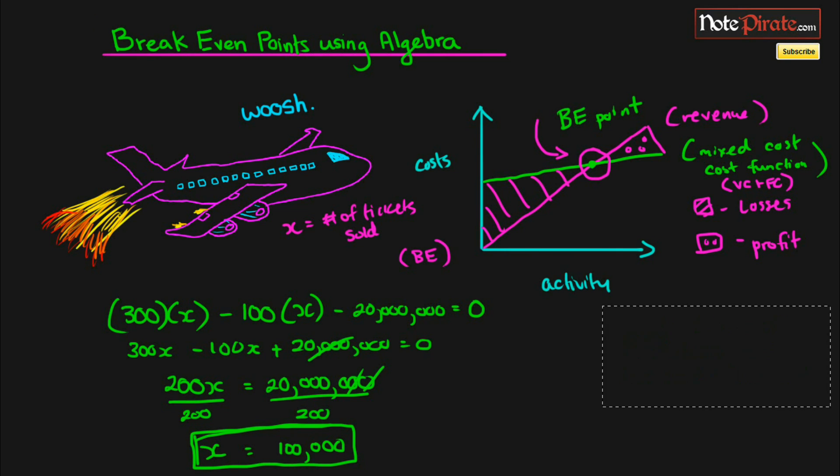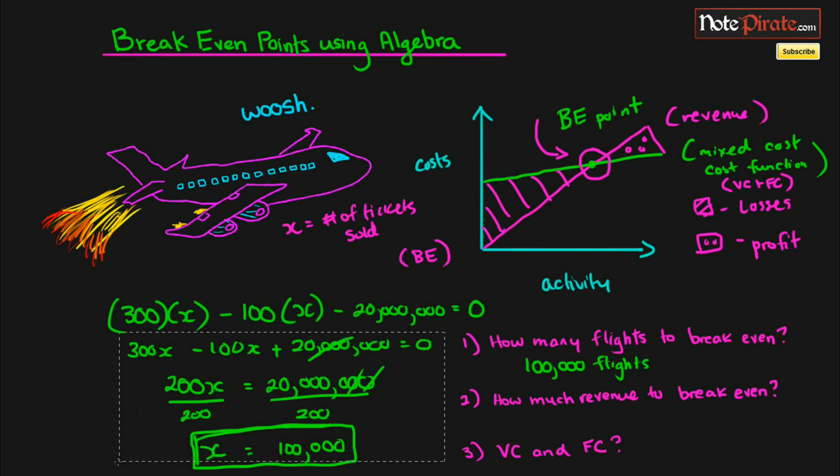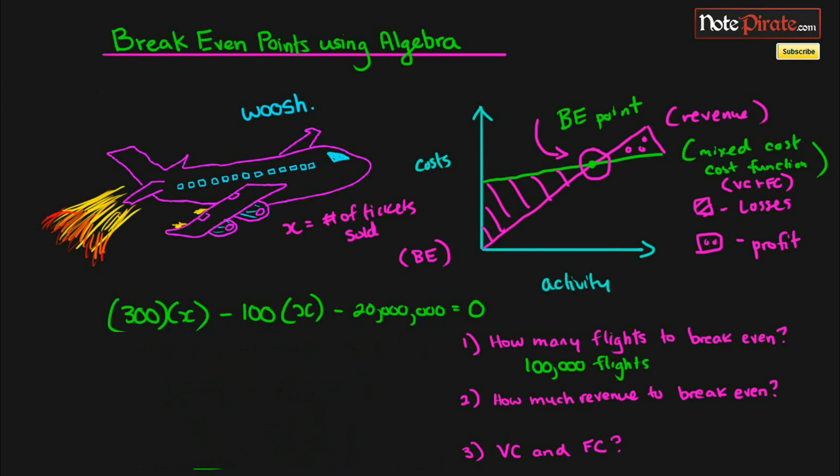Just to go a little bit further we can actually solve for some questions like these ones right here. How many flights to actually break even? Well we solved for that, that's going to be 100,000 flights. How much revenue to break even? Well we know that we have to generate 100,000 flights or tickets sold in order to break even. So we're going to look at the revenue part of the equation, which is this, and we're going to say 300 times the number of tickets sold to break even, which was 100,000. That's going to give us the amount of revenue needed to break even, which is going to be $30 million.